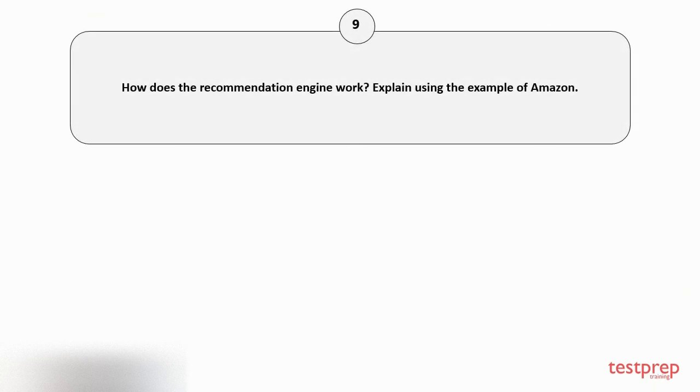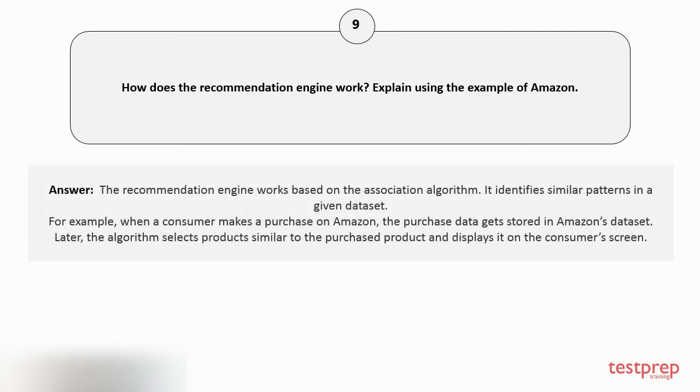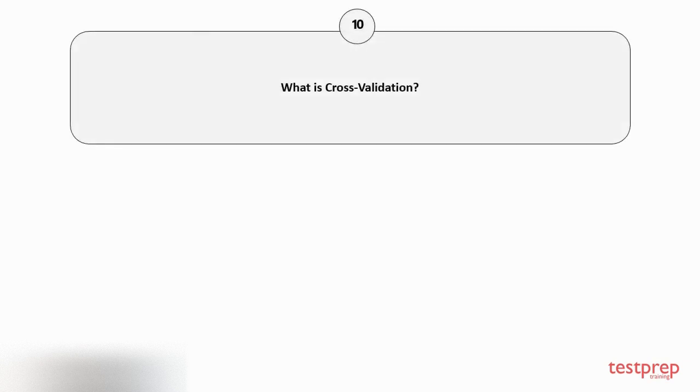Question number nine: How does the recommendation engine work? Explain using the example of Amazon. The recommendation engine works based on the association algorithm. It identifies similar patterns in a given dataset. For example, when a consumer makes a purchase on Amazon, the purchased data gets stored in Amazon's dataset. Later, the algorithm selects products similar to the purchased product and displays it on the consumer screen.